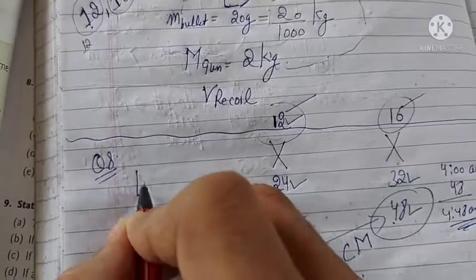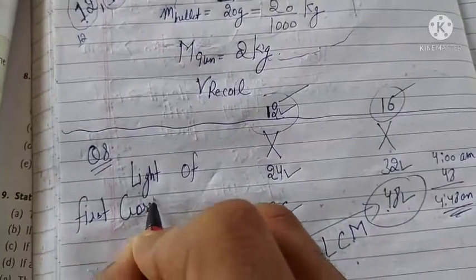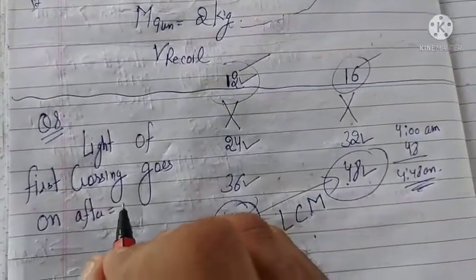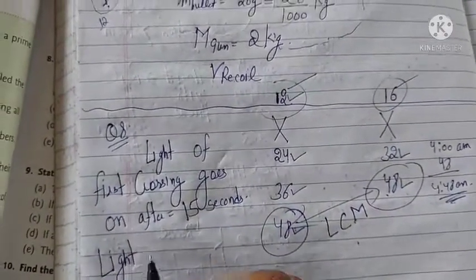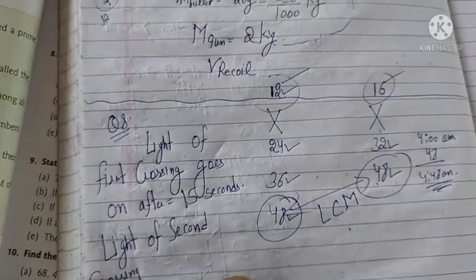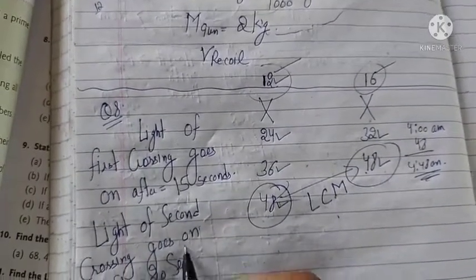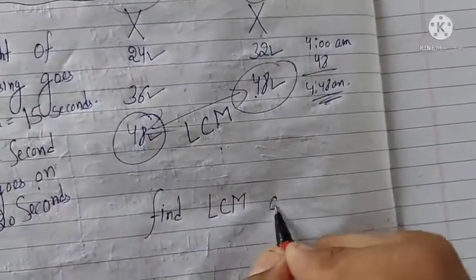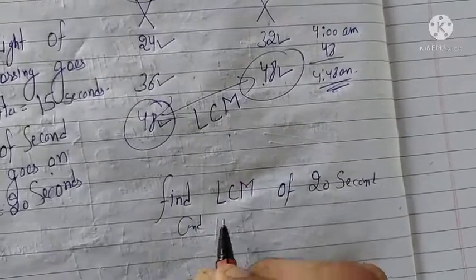So the light of the first crossing goes on after 15 seconds, and the light of the second crossing goes on after 20 seconds. We need to find the LCM of 15 seconds and 20 seconds.